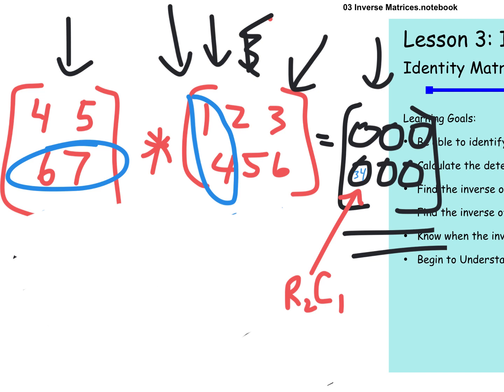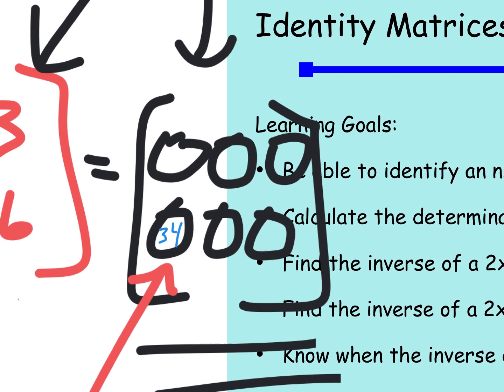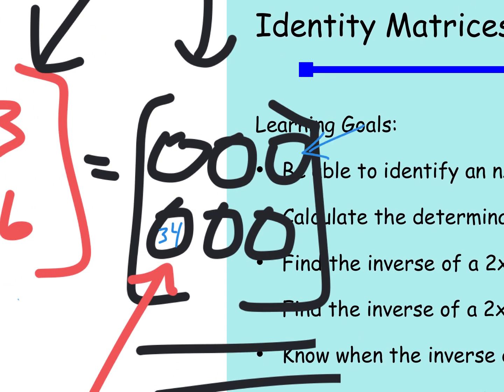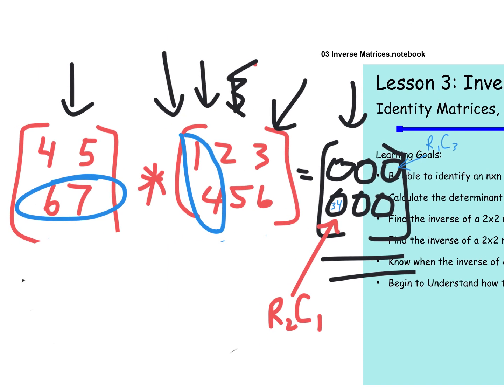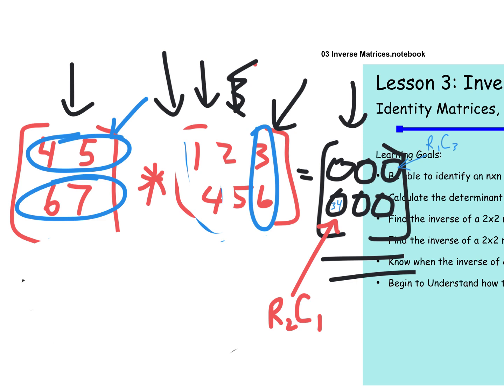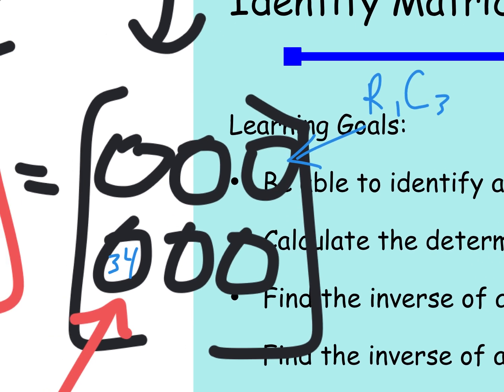We'll use the Dice of Destiny to pick the next contestant. Row 1, last person — Chase R. I'm going to choose this spot right here. Can you tell me what its address is? Row 1, column 3. Good. So I go back over to row 1 and column 3. You times 4 by 3 and 5 by 6 — that's 12 and 30. So the final answer is 42. The meaning of life, according to Hitchhiker's Guide to the Galaxy.